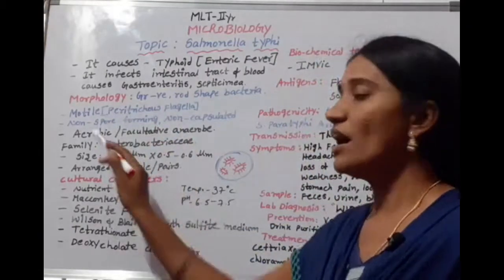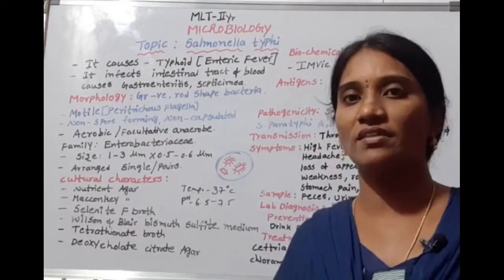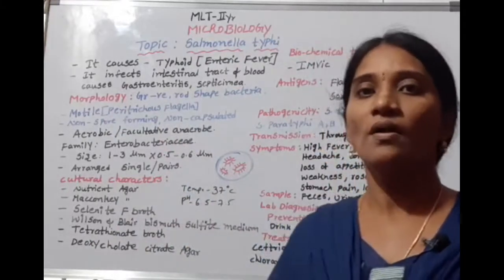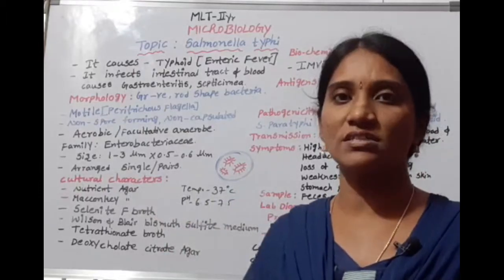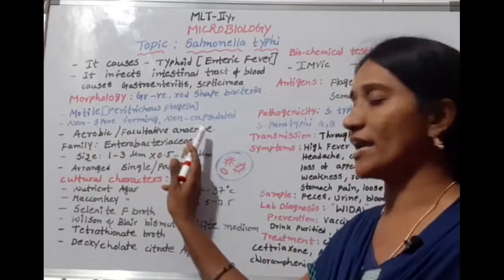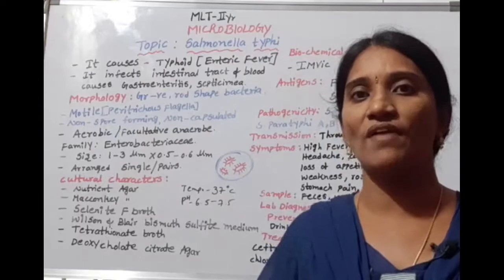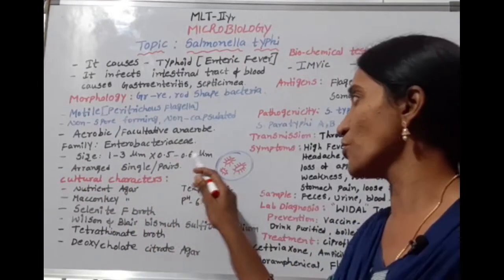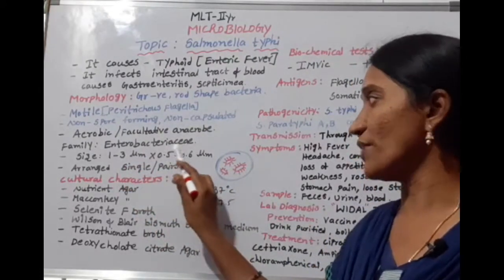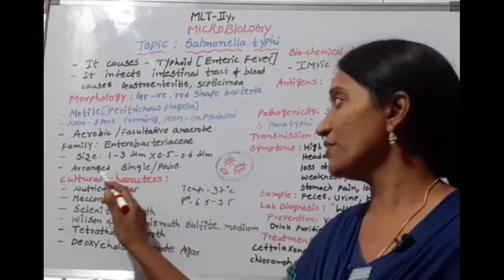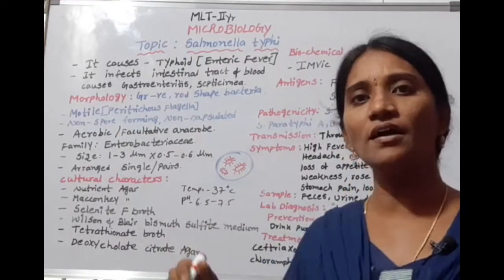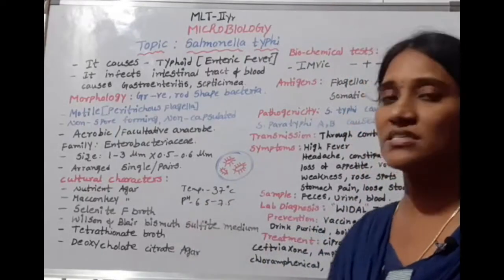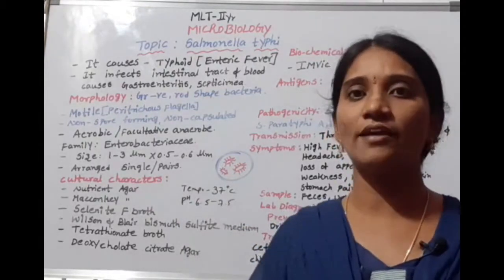Salmonella typhi are non-capsulated bacteria. These are aerobes — they require oxygen for their growth. A few are facultative anaerobes, meaning they can grow in the presence or absence of oxygen. The family is Enterobacteriaceae. The size of the rod is 1–3 micrometres in length and 0.5–0.6 micrometres in diameter, arranged in singular pairs.